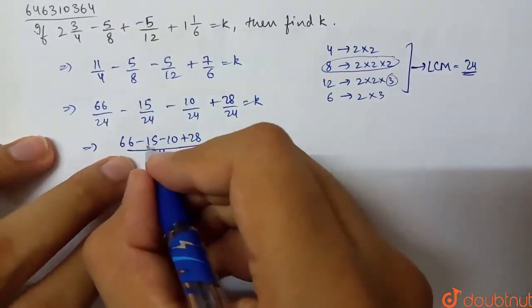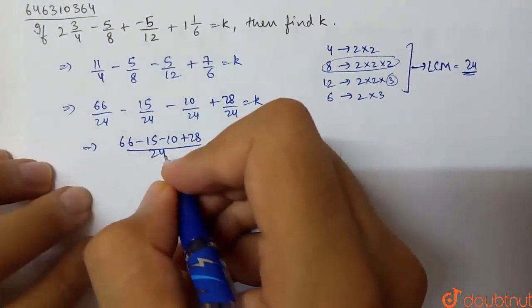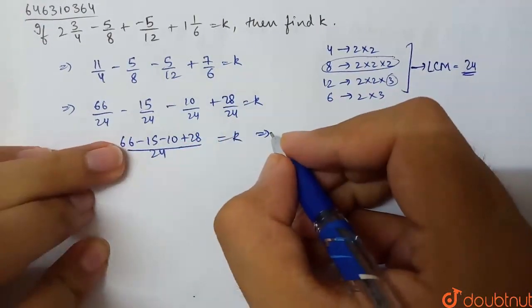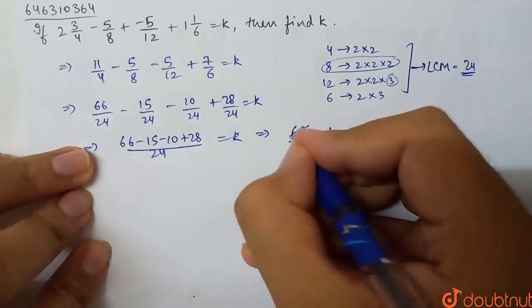First, 10 plus 15 equals 25, and 28 minus 25 equals 3. So we have 66 plus 3, which is 69 over 24 equals k.